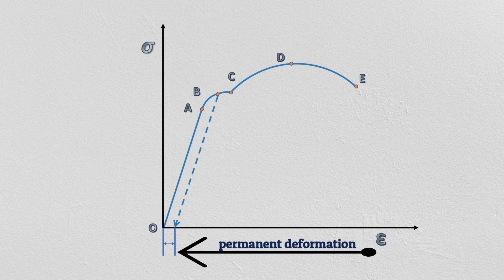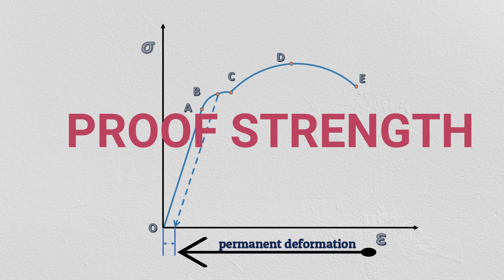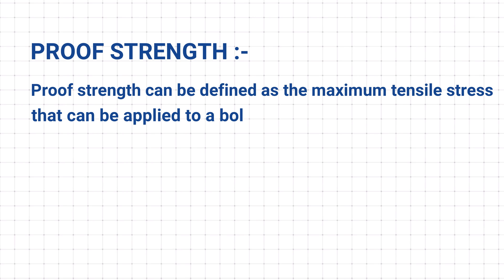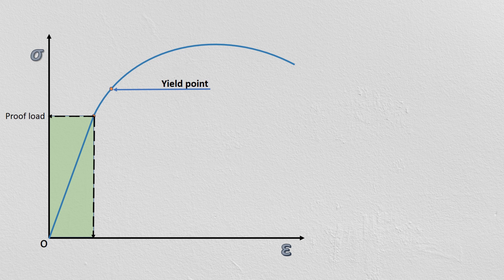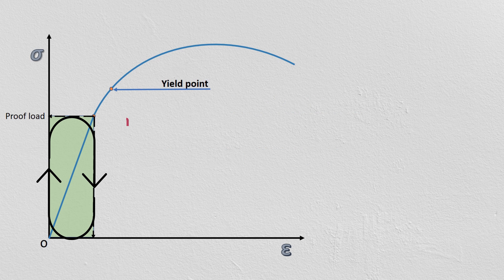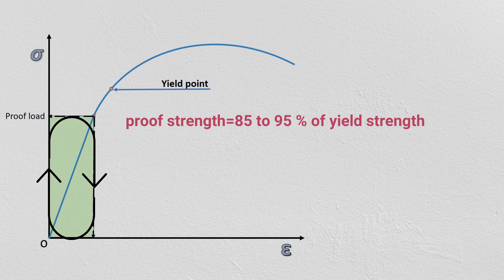So in case of fasteners we define a term proof strength or proof load. Proof strength can be defined as the maximum tensile stress that can be applied to a bolt which will not result in plastic deformation. In other words, the material must remain in its elastic region when loaded up to its proof strength. Proof strength is typically between 85 to 95% of its yield strength.